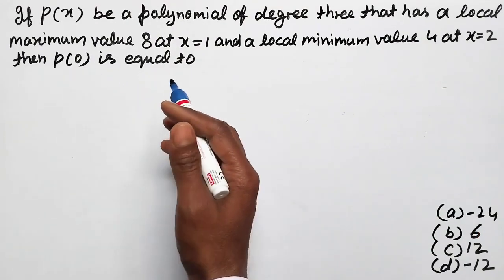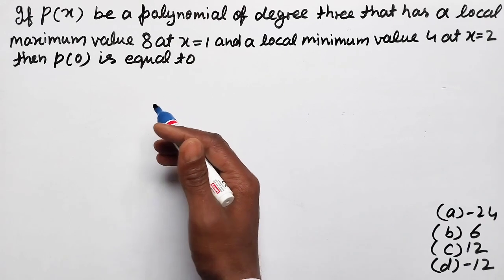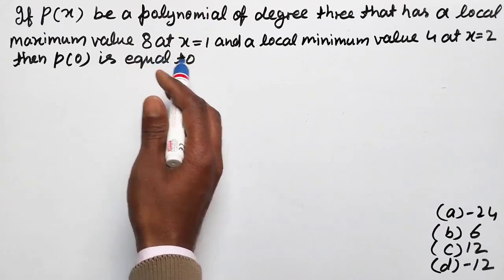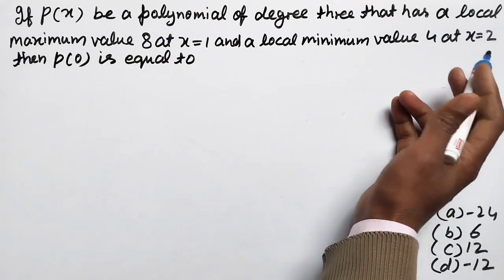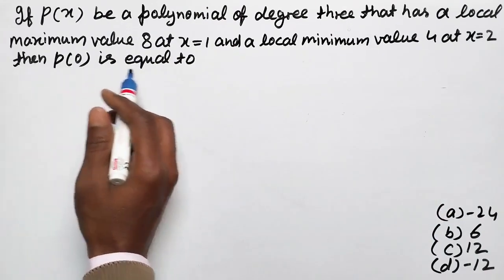If P(x) be a polynomial of degree 3 that has a local maximum value 8 at x equal 1 and a local minimum value 4 at x equal 2, then P(0) is equal to.